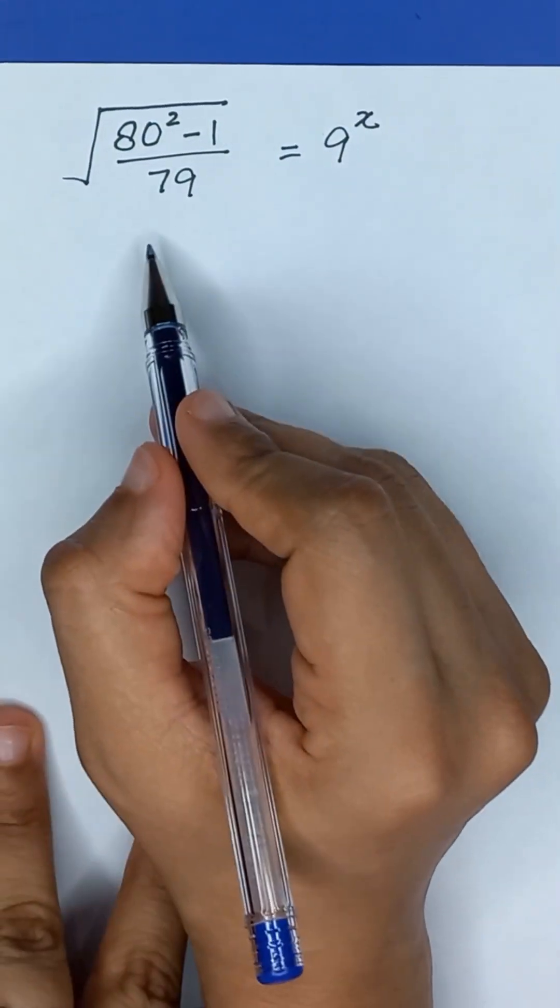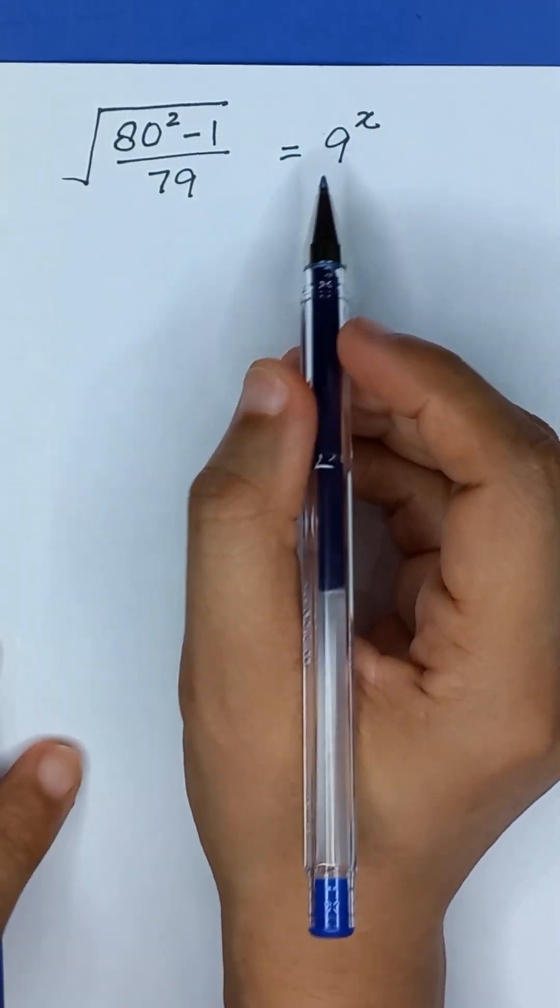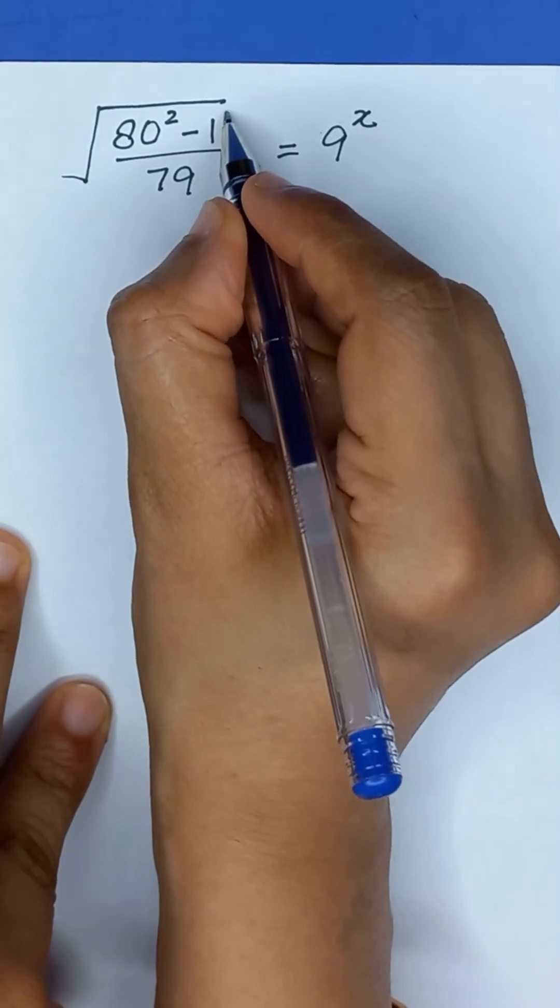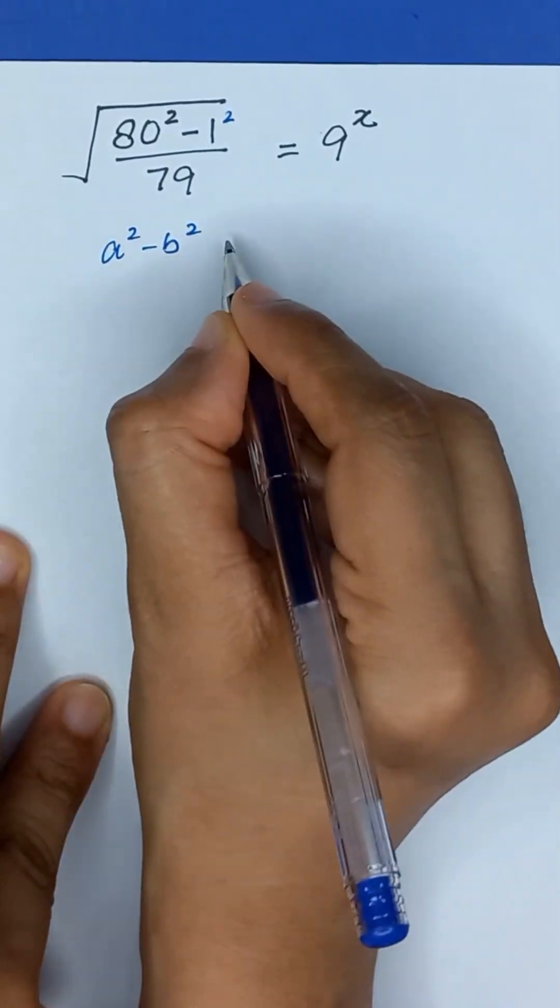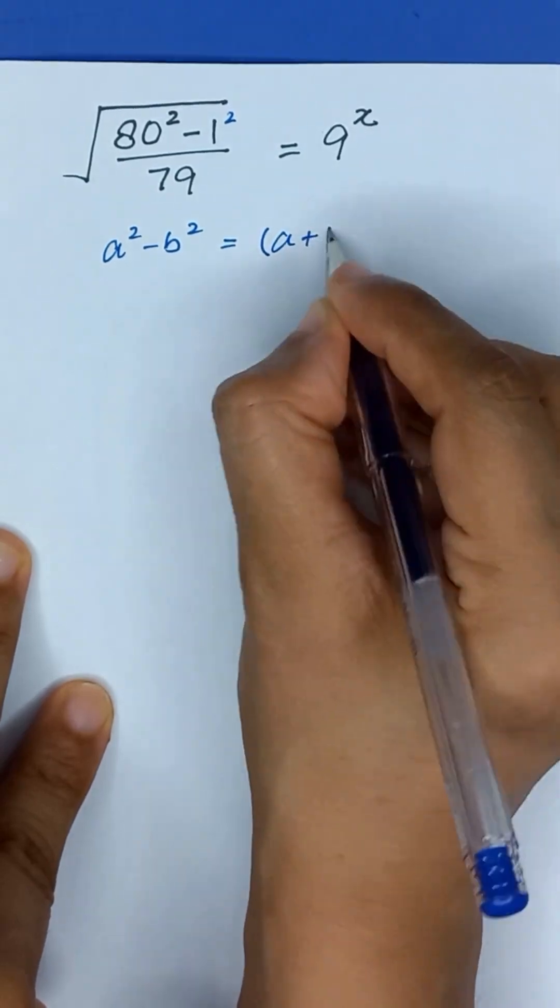Square root of 80 squared minus 1 divided by 79 is equal to 9 to the power x. So, 1 can be written as 1 squared. It will be in the form of a squared minus b squared, which is equal to a plus b times a minus b.